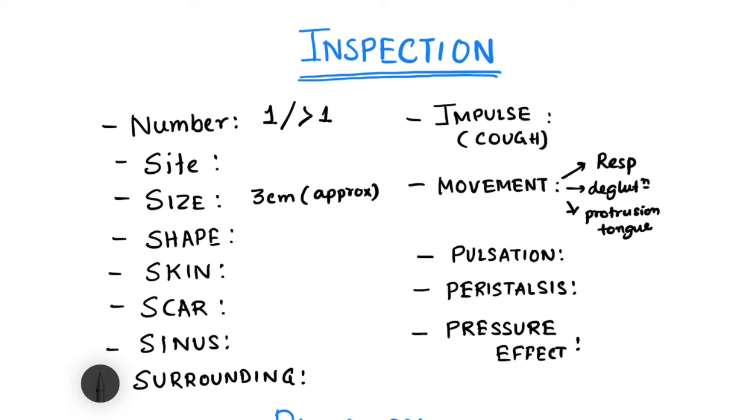Peristalsis - in abdominal lumps, if you see peristaltic movements over the lump, that indicates a lump created by hollow viscus like the intestines. Then whether there is any pressure effect. If the lump is creating pressure over a vein or lymphatic, that can cause venous or lymphatic obstruction leading to edema or swelling. This is known as pressure effect. Tumors cause pressure effects and many symptoms arise from their pressure effect.